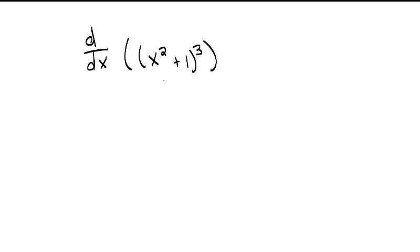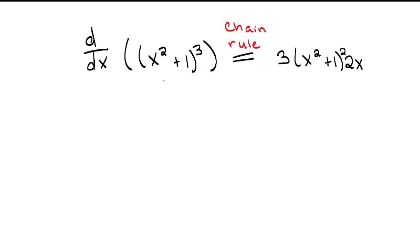Suppose we wanted to differentiate x squared plus 1 to the third. Because this is a composition of functions, the chain rule tells us that d/dx of (x² + 1)³ is equal to 3 times (x² + 1)² times 2x. Simplifying, this is 6x times (x² + 1)².